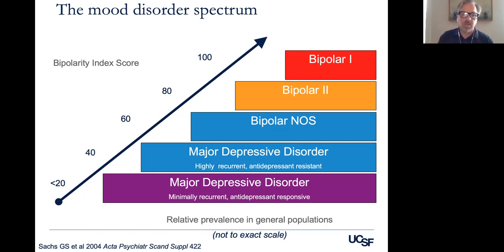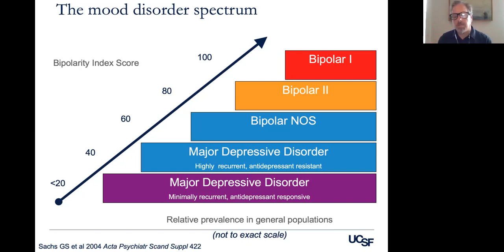You'll see those numbers there — these are not psychometrically validated numbers, so I wouldn't put this in your chart notes. But it kind of gives you a ballpark idea if you use this system of thinking about how bipolar somebody might be, thinking of that in relative degrees.